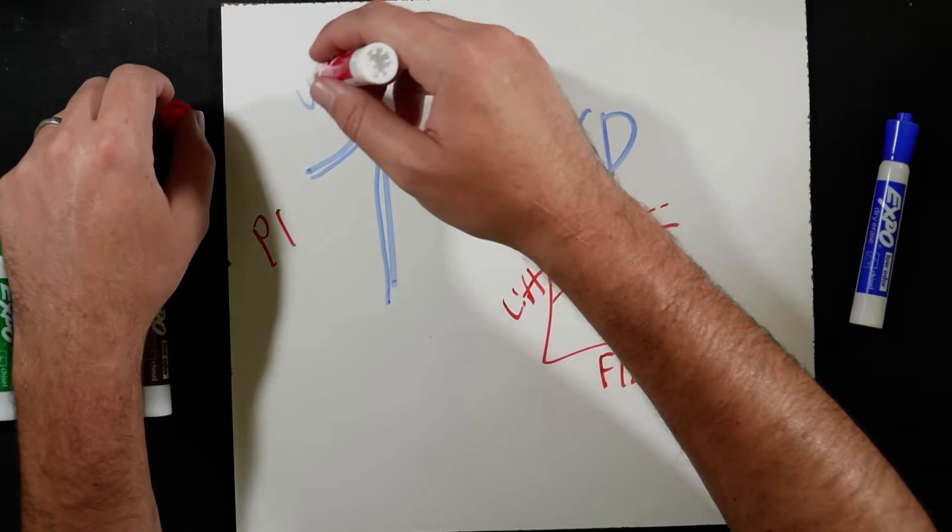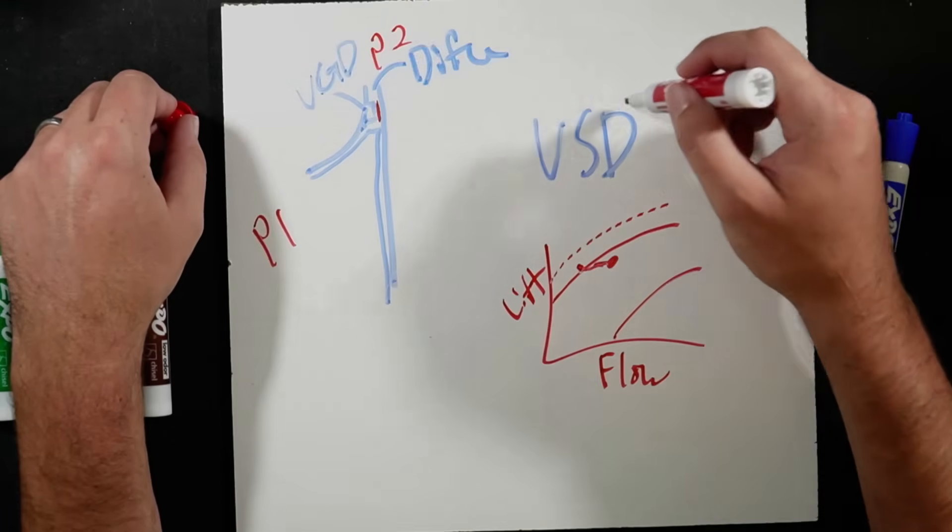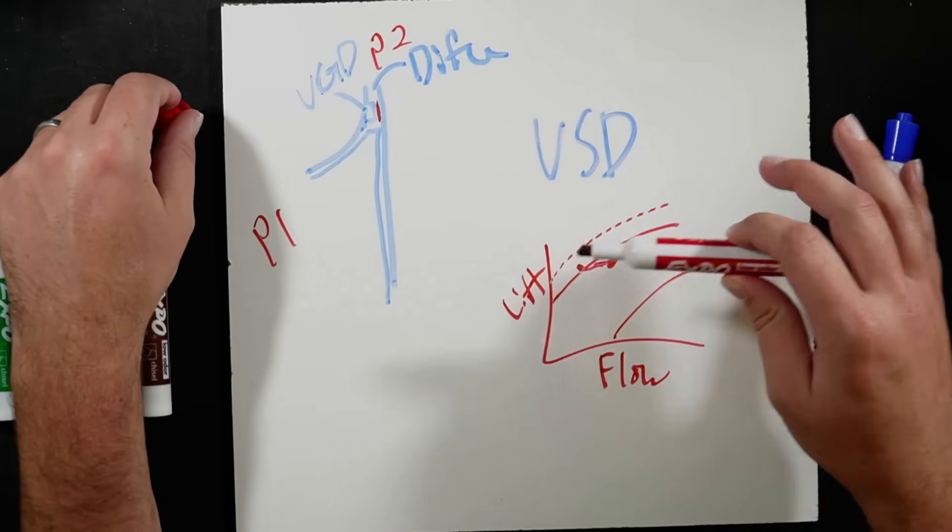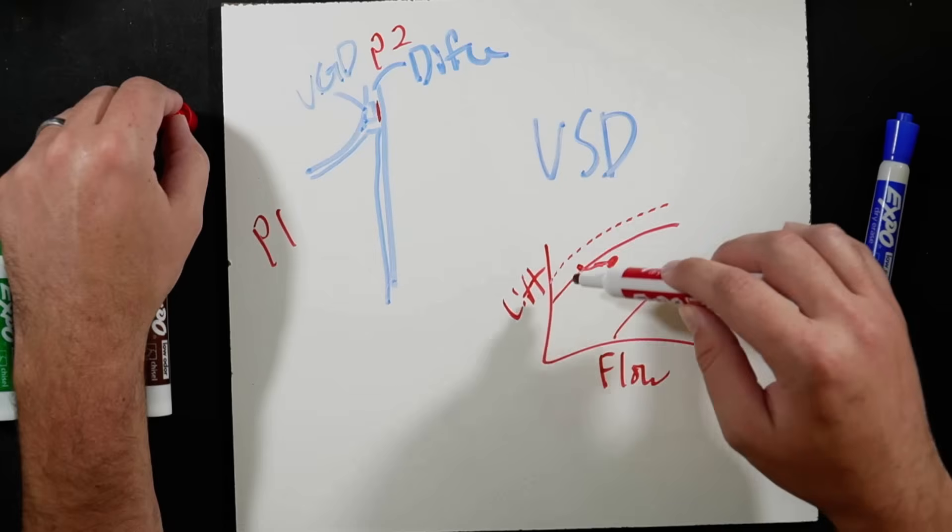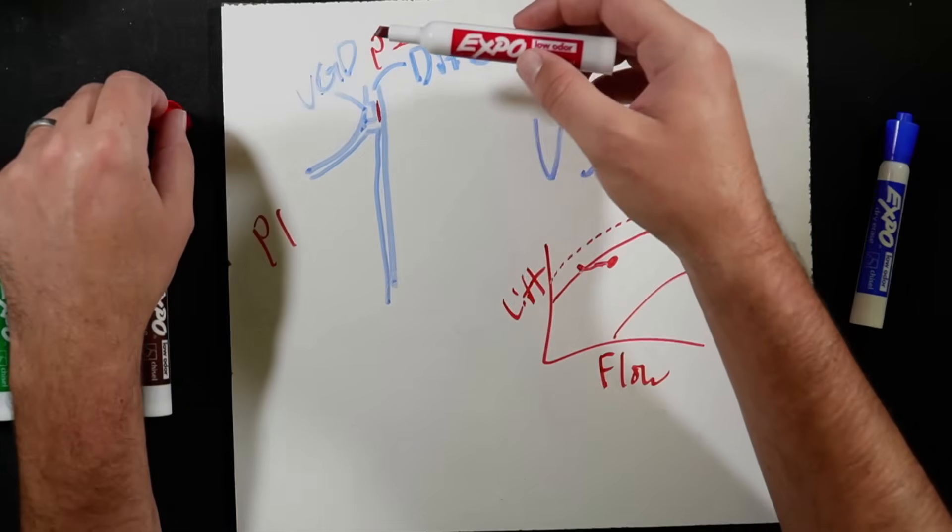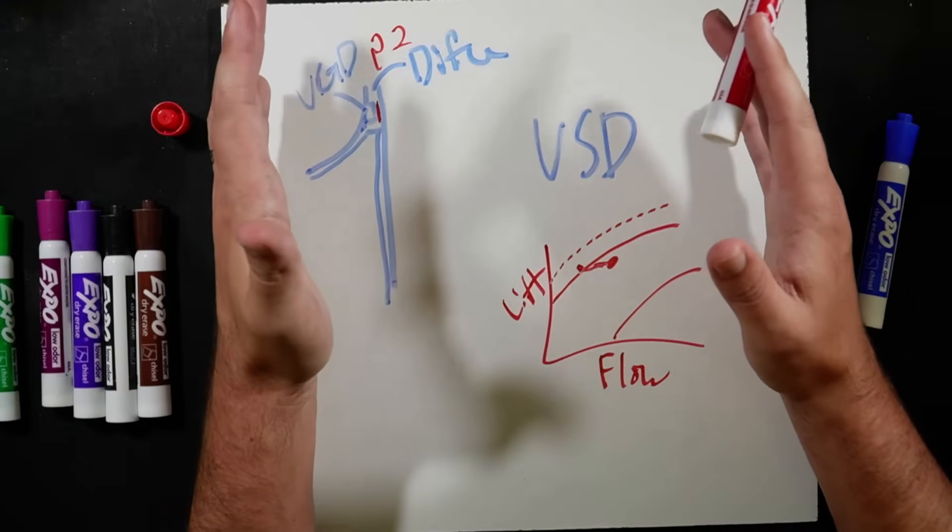So this will stay open as much as it can. And we will slow the drive down to a minimum speed. Then once we hit that speed, which will be based off of this chart here, the next step will be to start closing the VGD.